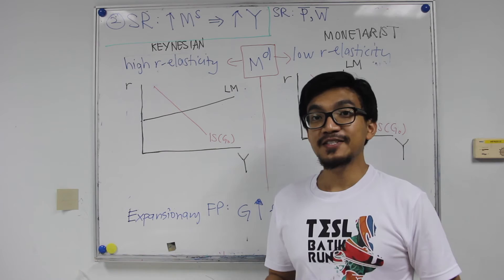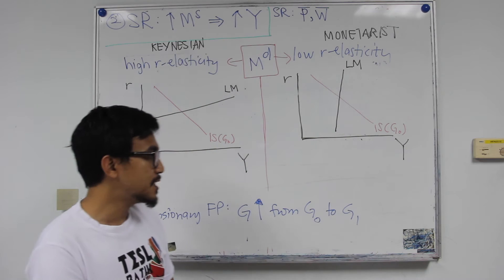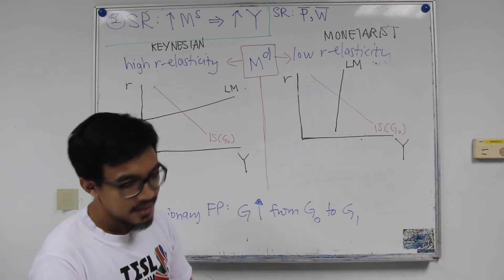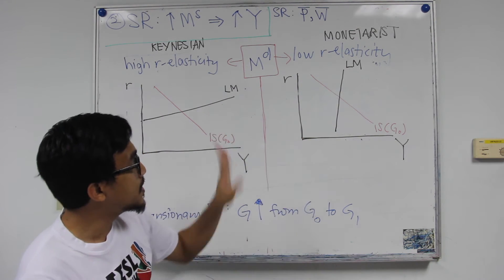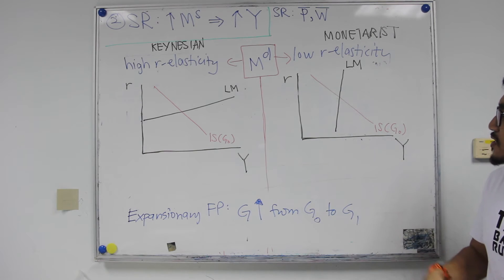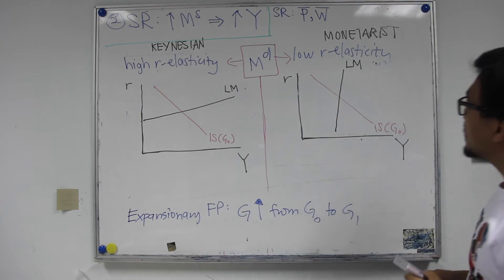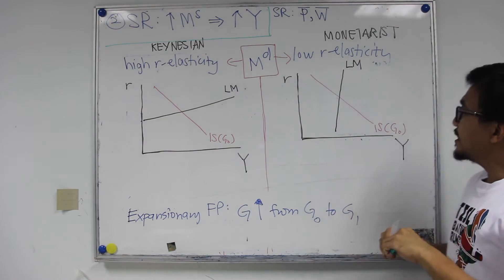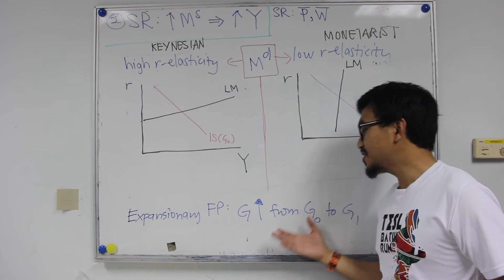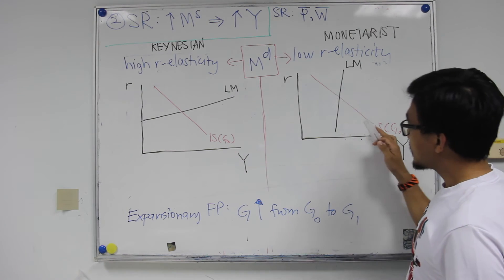Now what happens if there is an expansionary fiscal policy? Assume the government increases government expenditure from G0 to G1. Let's look at the IS-LM curves for both the monetarist and Keynesian cases. A change in government expenditure will cause a shift in the IS curve, because G is a component of investment plus G, which forms the IS curve. So the IS curve shifts to the right.